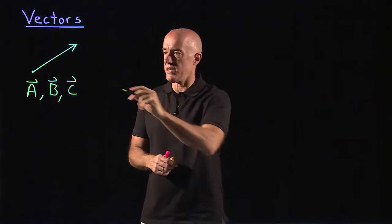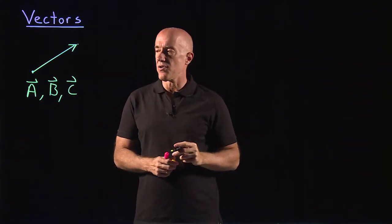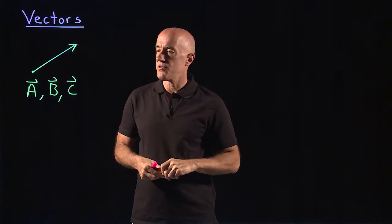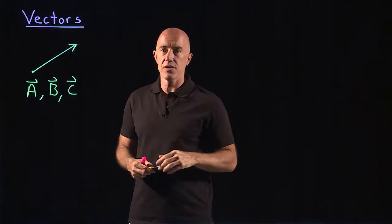I'm going to use this notation of putting this arrow-like object on top of the vector to show you that this is a vector.